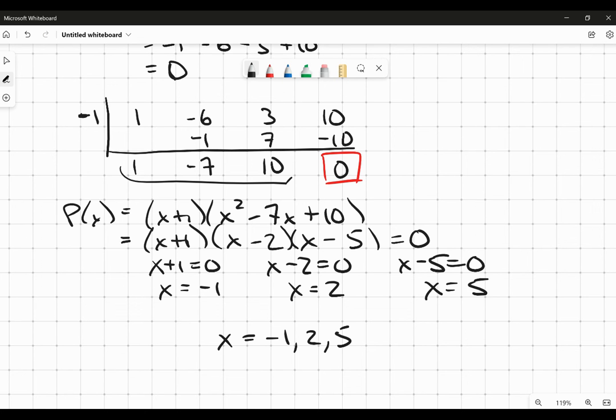negative 1, 2, 5. Whatever you do at this point, don't put parentheses around that because that implies that it's a point that you've listed and then the values become an x, a y, and a z. I just want them to be all x's, all possible values for x.